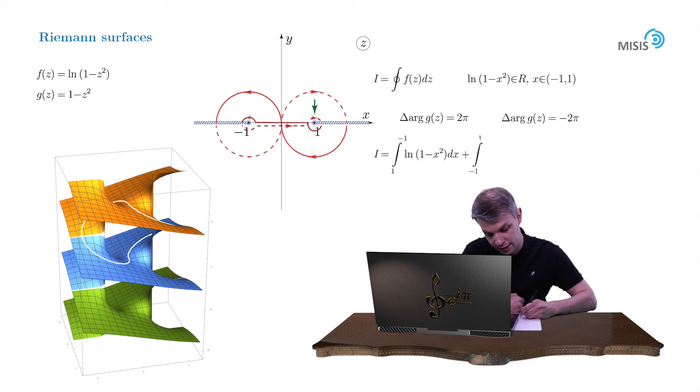while the second integral from negative 1 to 1 of function log of 1 minus x squared plus 2 pi dx.